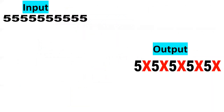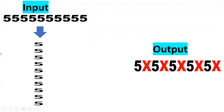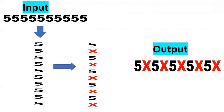We can't achieve this directly. We need to perform three steps: first, convert the horizontal string into vertical manner; then mark the alternate numbers as X; and finally aggregate back. So we'll go step by step.